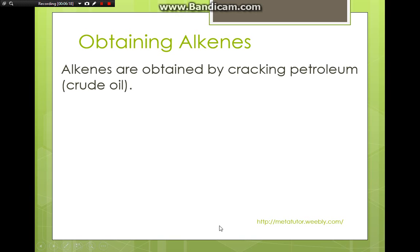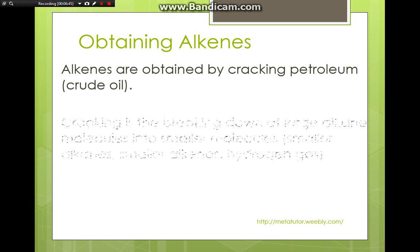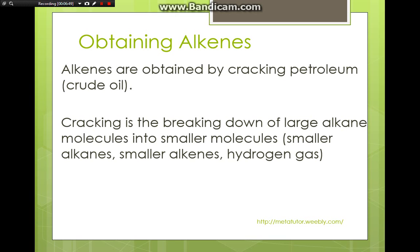How do we get alkenes? When we get crude oil, we use fractional distillation to separate out the different fractions. The larger fractions at the bottom are not as useful — they don't burn as easily. What we do is take the larger molecules found at the bottom of the fractional distillation and crack them into smaller molecules. When broken down, we get smaller alkanes, small alkenes, and sometimes even hydrogen gas. So alkenes aren't really found directly in fractional distillation; they are obtained by cracking the larger molecules obtained from fractional distillation.